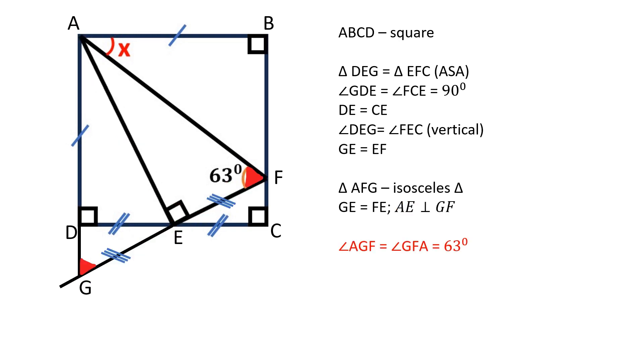Angles AGF and GFA are congruent and equal to 63 degrees each. Therefore, angle GAF is equal to 54 degrees. Angle FAB is equal to 90 minus 54 which is 36 degrees.